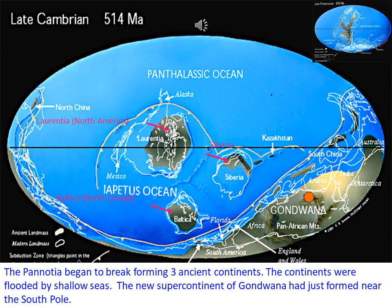In the Cambrian era, which is 514 million years ago, you could see a large single continent called Gondwana, which included Africa, South America, Antarctica, India, Australia, and others. This supercontinent of Gondwana had just formed near the South Pole — where today we can see Antarctica. Almost all the continents we see today were clustered near Antarctica at that time. That is the beauty of the Cambrian era.